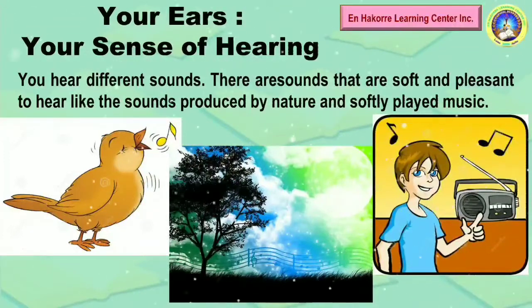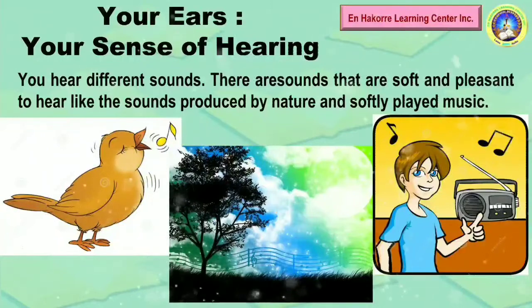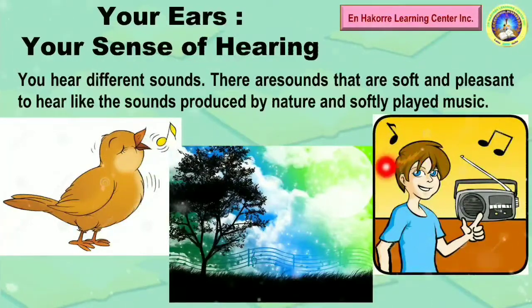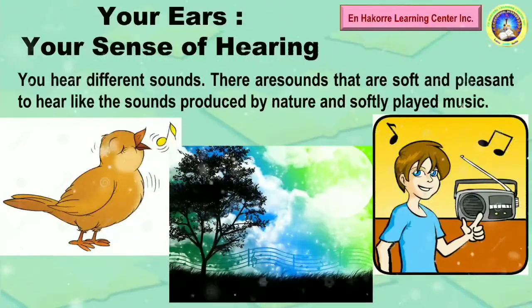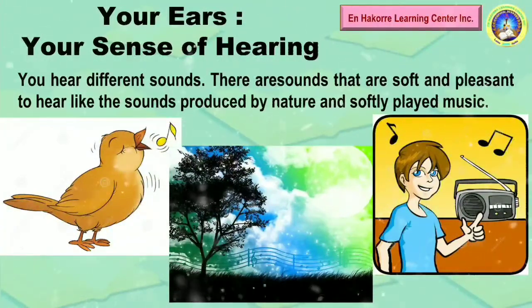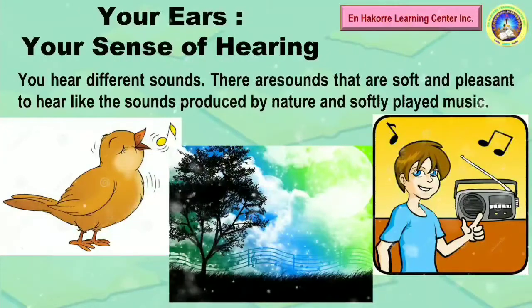So you use your ears to listen to these sounds. Did you know, children, that sounds have two kinds — pleasant and unpleasant sounds? When we say soft and pleasant sounds, these are the sounds produced by nature and softly played music. These are good for you to hear and are not loud enough to create noise, which is unpleasant to our ears. So pleasant sounds come from nature and softly played music.